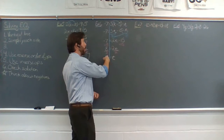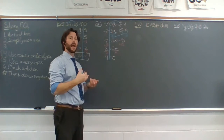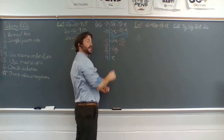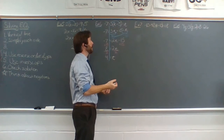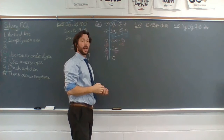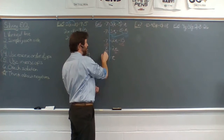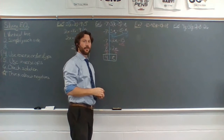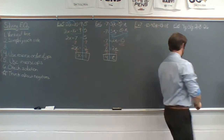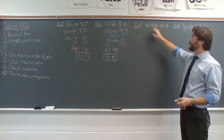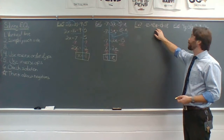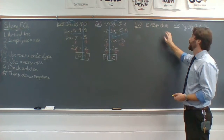Now we want to take that 4, substitute it back into the original, and make sure that it works. 4 minus 5 is negative 1. 3 times negative 1 would be negative 3. And negative 3 minus 4 would give us negative 7. The solution checks out — we can say that 4 equals t. Next up, we have negative 10 plus 4 times the quantity 3p plus 10 equals 18.